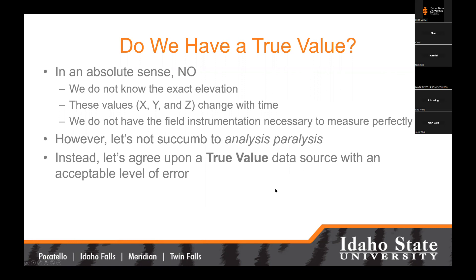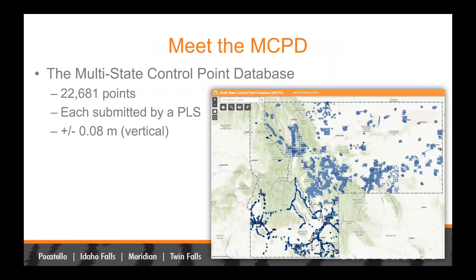Instead, let's come to an agreement upon a true value data source with an acceptable level of error. Meet the MCPD — the multi-state control point database. Right now it contains over 22,681 points. Since I made this presentation just a little while ago, we've had additional submissions of control points into the MCPD, so that number has gone up. Each of those control points is submitted by a professional land surveyor here in Idaho. Overall, the vertical positional accuracy statement for points in the MCPD is plus or minus 0.08, or eight hundredths of a meter.